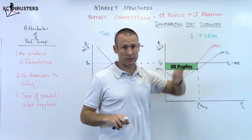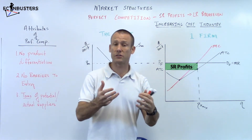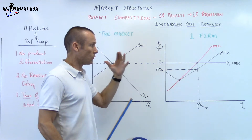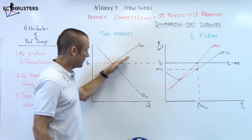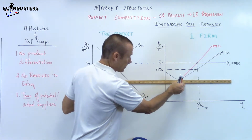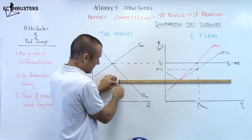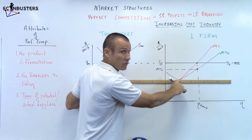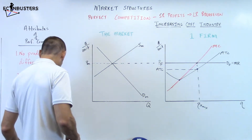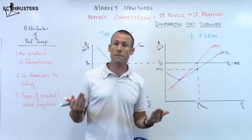Now we need to move to the long run break-even point. Remember, we've got an increasing cost industry. But I'm going to think about the constant cost industry just for a second so we can see the difference. If this was a constant cost industry, we would say supply is going to enter until that price firm and MR line moves all the way to minimum ATC. I would have a new supply line going right through that dot, drawing the price firm intersecting right there at minimum ATC. But that's not what's going to happen, because this ATC curve and the MC line are not going to stay there — they're both going to go up.